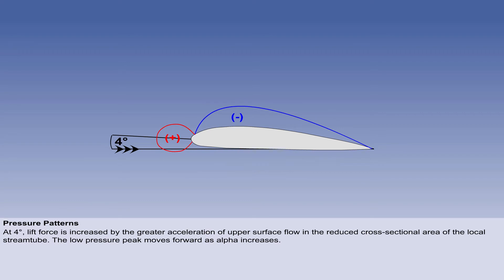As angle of attack is increased, here to around 4 degrees, the lift force is increased, because of the greater acceleration of the upper surface flow in the reduced cross-sectional area of the local stream tube. The low pressure peak moves forward as the angle of attack increases.